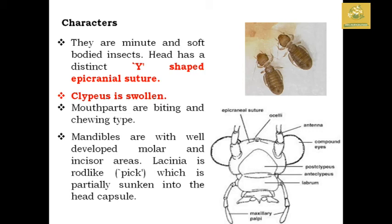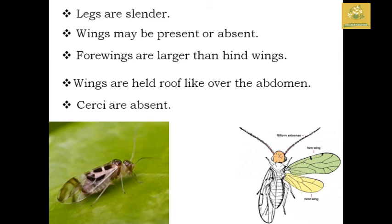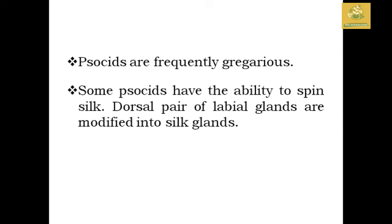The legs are slender. Wings may be absent or present; when present, they have four wings — fore wings and hind wings. In most species, wings at rest are held in a roof-like structure over the body.